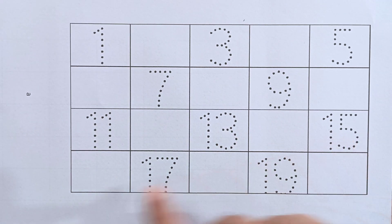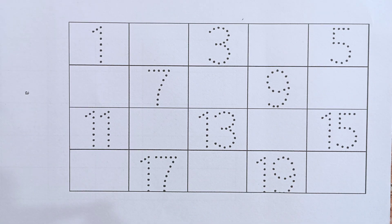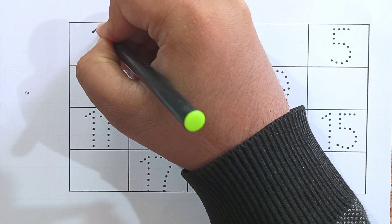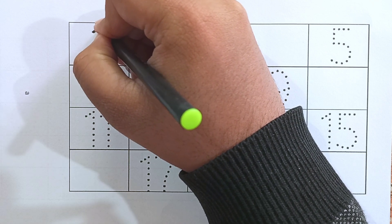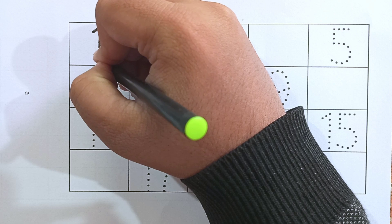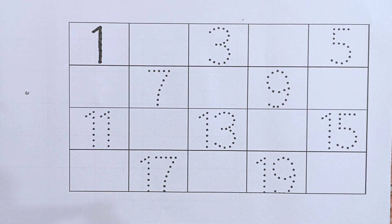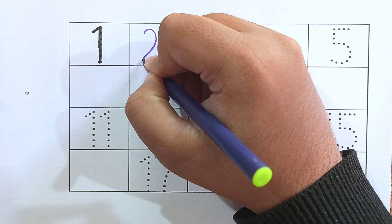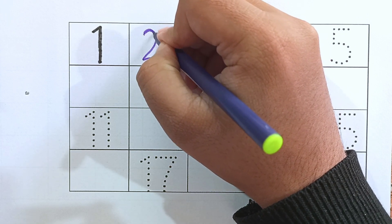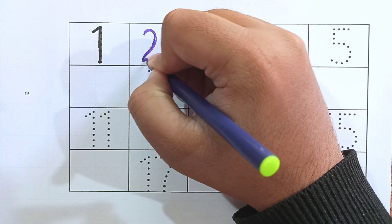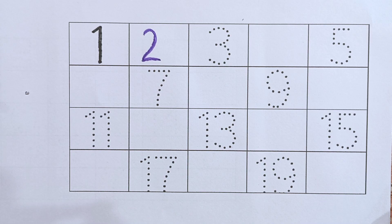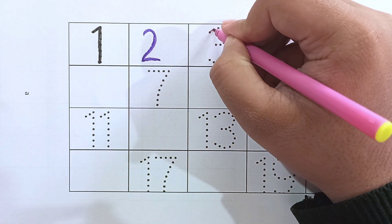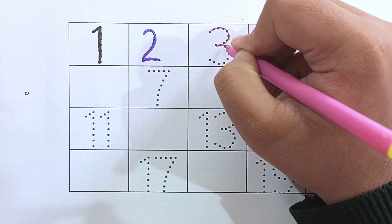Okay, so let's start filling the numbers. First number is 1 — now I will color the 1. After 1, the next number will be 2. I'm writing 2, this is 2. After 2, the next number is 3, which is already there — I will write it again. Next number is 3: 1, 2, 3.